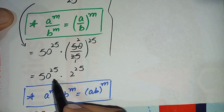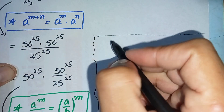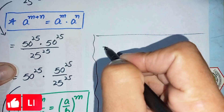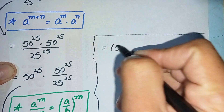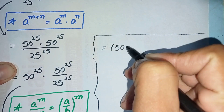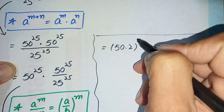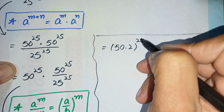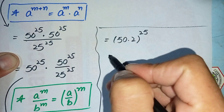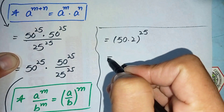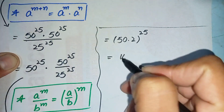We will multiply the bases, so it will become equal to (50 times 2) whole raised to power 25. Multiplying the two bases: 50 times 2 is 100, raised to the power 25.